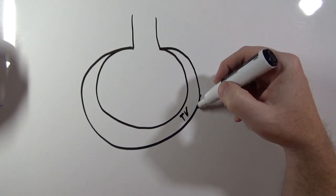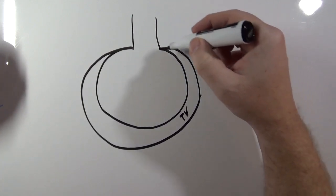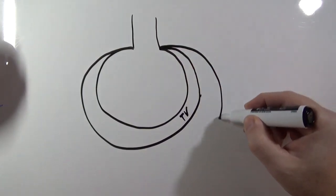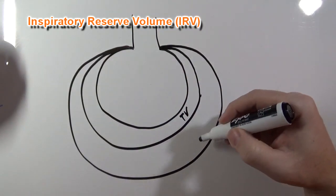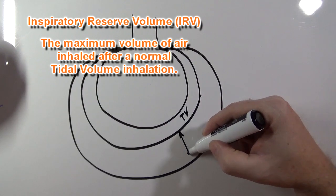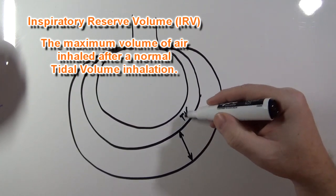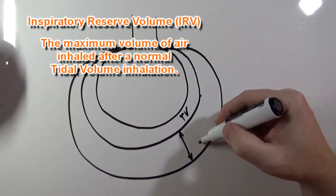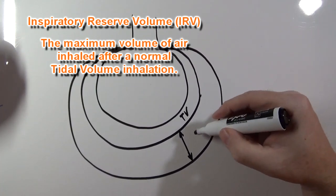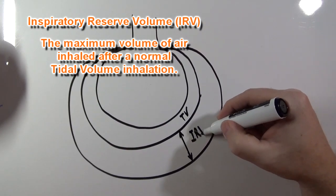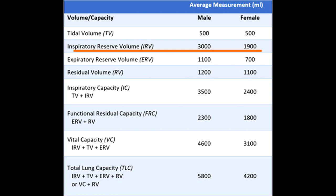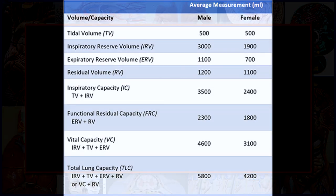If I were to breathe in normally, but then after I breathe in normally, I breathe in as much air as I can and the lungs would expand to about this size right here. This volume of air that I'm breathing in after a normal breath — the maximum amount of air I can breathe in after a normal inhalation — is the inspiratory reserve volume. The average inspiratory reserve volume for a male is 3,000 milliliters, and for a female is 1,900 milliliters.